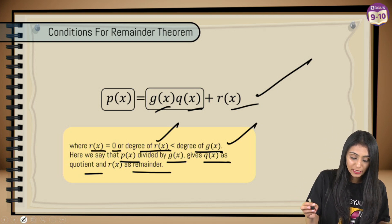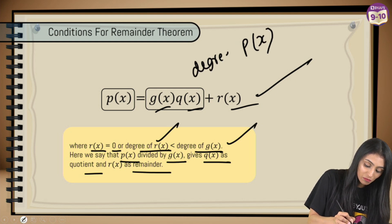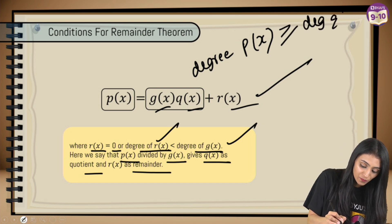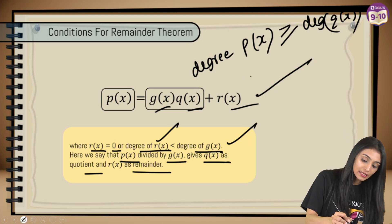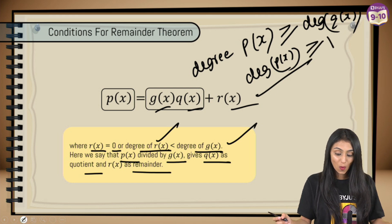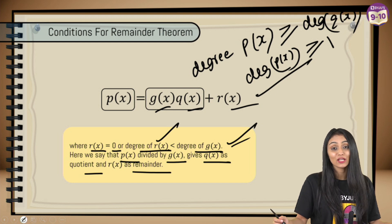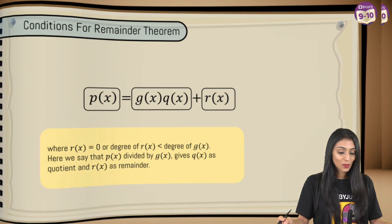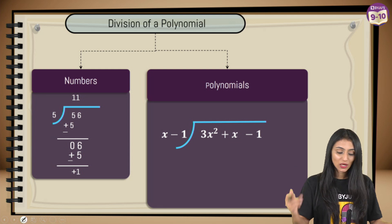A few more things to keep in mind: the degree of p(x), the dividend, must be greater than or equal to the degree of q(x), the quotient. Also, the degree of p(x) must be greater than or equal to 1, and the degree of r(x) must be less than the degree of g(x). These are the three conditions to remember when dividing polynomials.